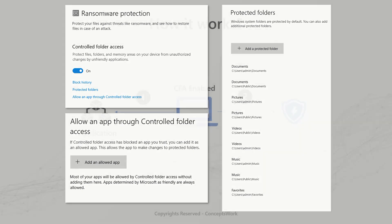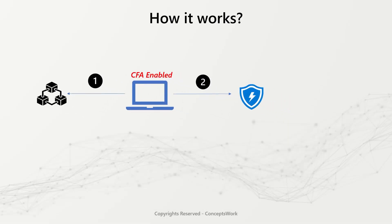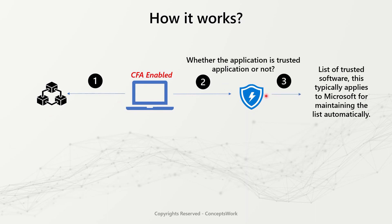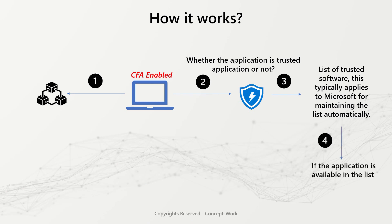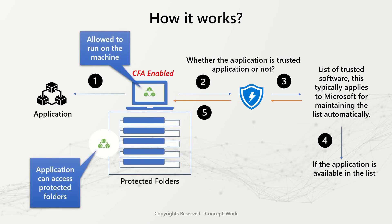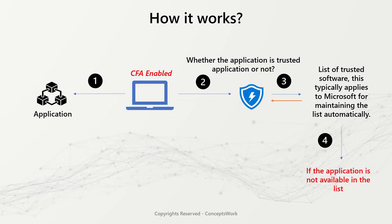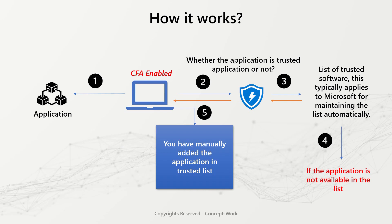Once you launch an application on a machine where controlled folder access is enabled, Microsoft Defender will first check whether the application is trusted, by verifying if it is available in the trusted application list maintained automatically by Microsoft. If the application is in the list, it is allowed to run and can access protected folders. In the second scenario, when the application is not in the list, controlled folder access verifies whether you have added the application manually in the trusted application list.